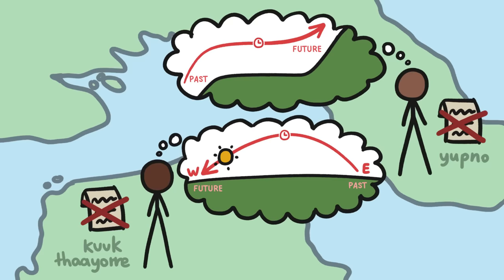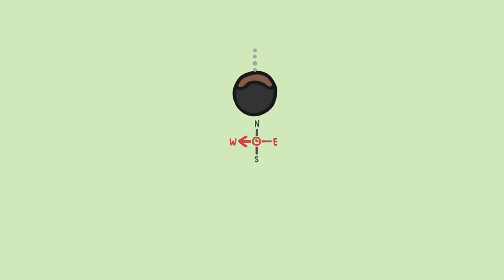In these systems, time's direction depends on a person's current orientation. For instance, a member of the Kuk Taor facing north would organize those sequential pictures from their right, where east is, to their left, where west is.